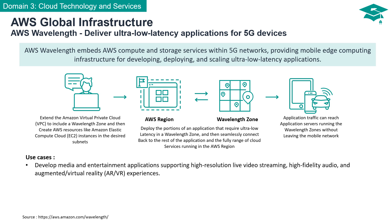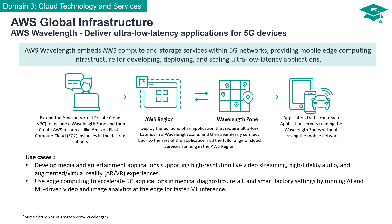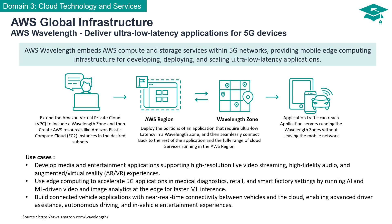Practical applications of AWS Wavelength include: media and entertainment apps supporting high-resolution live video streaming, high-fidelity audio, and augmented and virtual reality experiences. It also empowers edge computing in 5G for critical domains such as medical diagnostics, retail, and smart factory settings, running AI and ML-driven video and image analytics at the edge for faster ML inference. Additionally, it enables connected vehicle applications with near-real-time connectivity, supporting advanced driver assistance, autonomous driving, and in-vehicle entertainment.